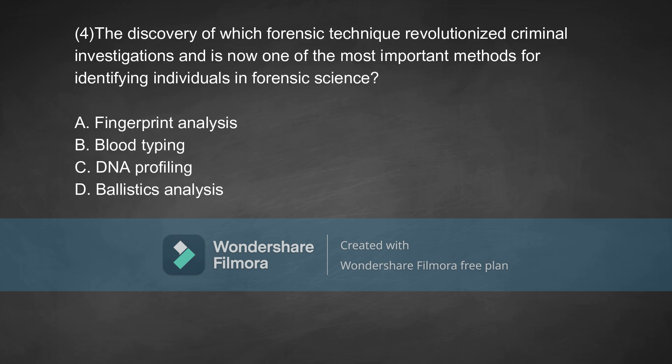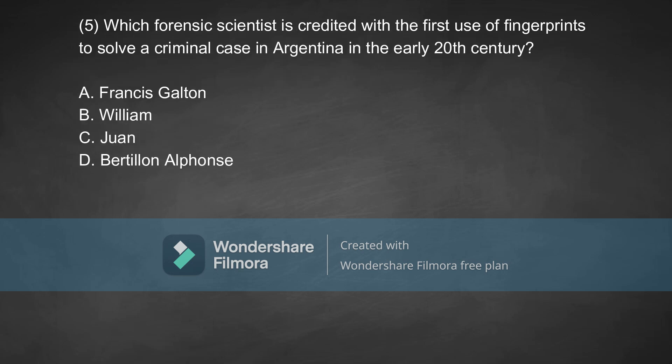The next question: the discovery of which forensic technique revolutionized criminal investigation and is now one of the most important methods for identifying individuals in forensic science? Option A, fingerprint analysis. Option B, blood typing. Option C, DNA profiling. Option D, ballistic analysis. The correct answer is Option C, which is DNA profiling.